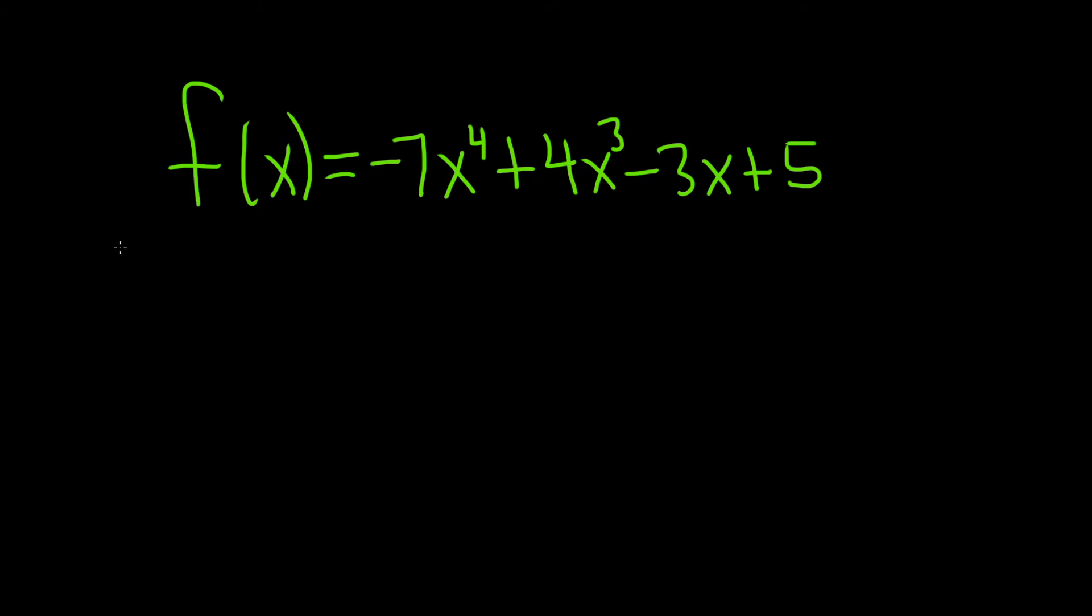So to find the end behavior, you look at two things. You look at the degree. In this case, the degree is 4, so we have an even degree. The degree is basically the biggest exponent.